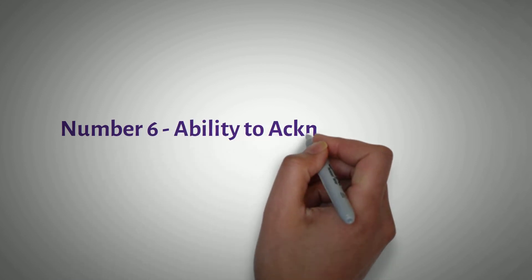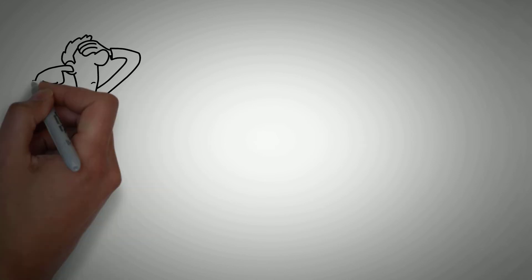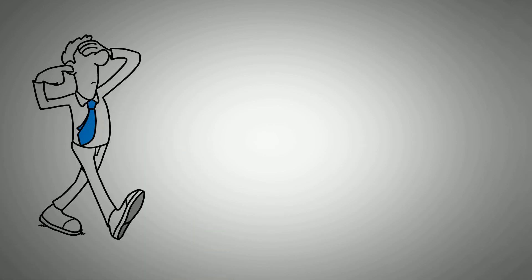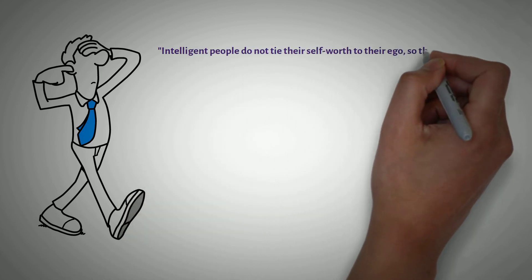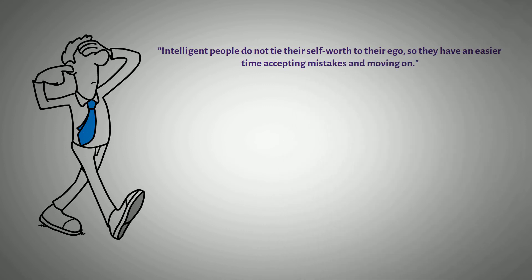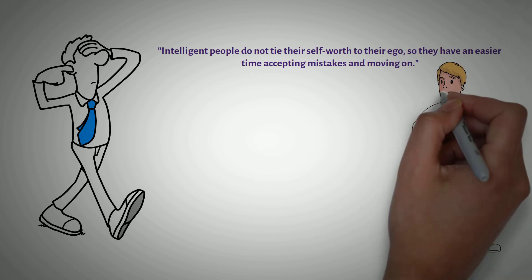Number 6: Ability to Acknowledge Faults. Those with an ego will never admit a fault or a shortcoming because they feel it makes them inferior. In contrast, intelligent people do not tie their self-worth to their ego, so they have an easier time accepting mistakes and moving on. Being honest with yourself and others is an admirable trait, and it displays high intelligence.